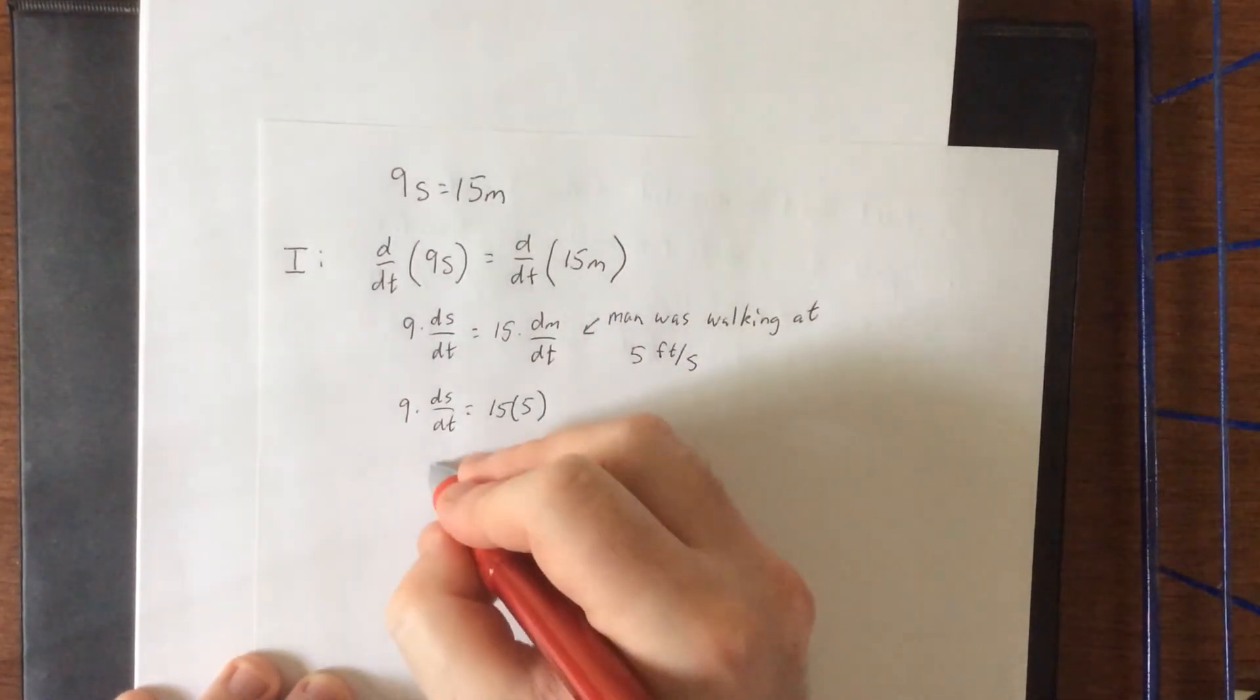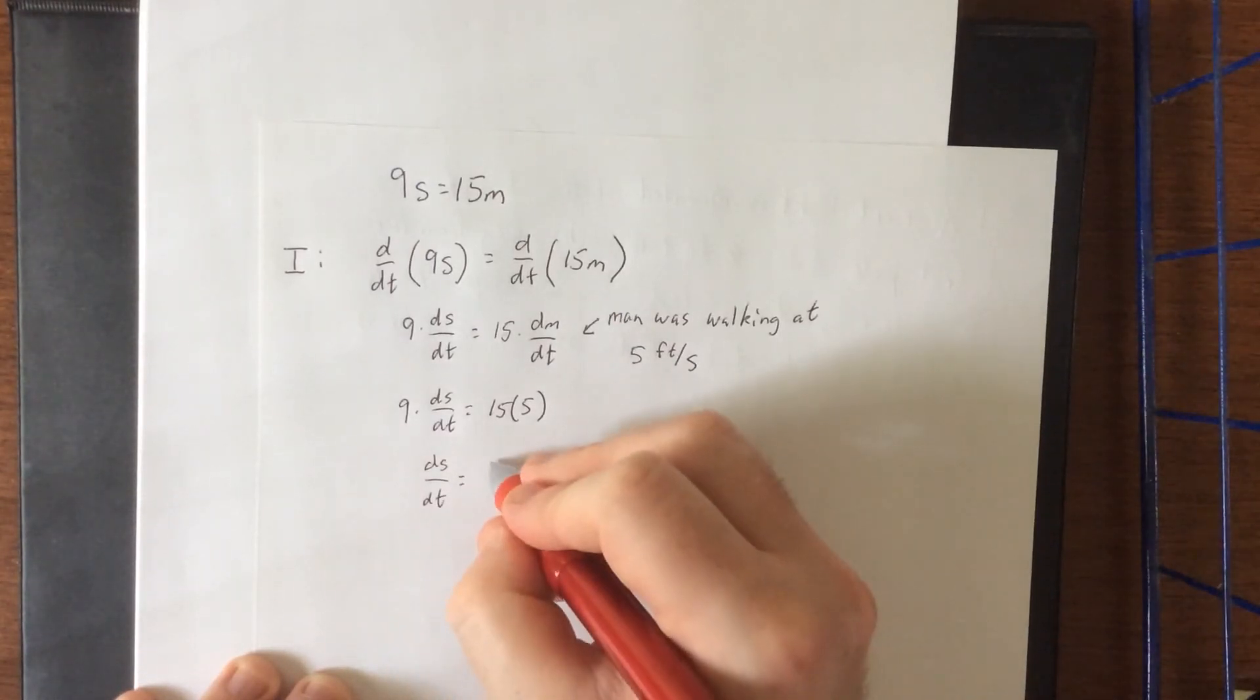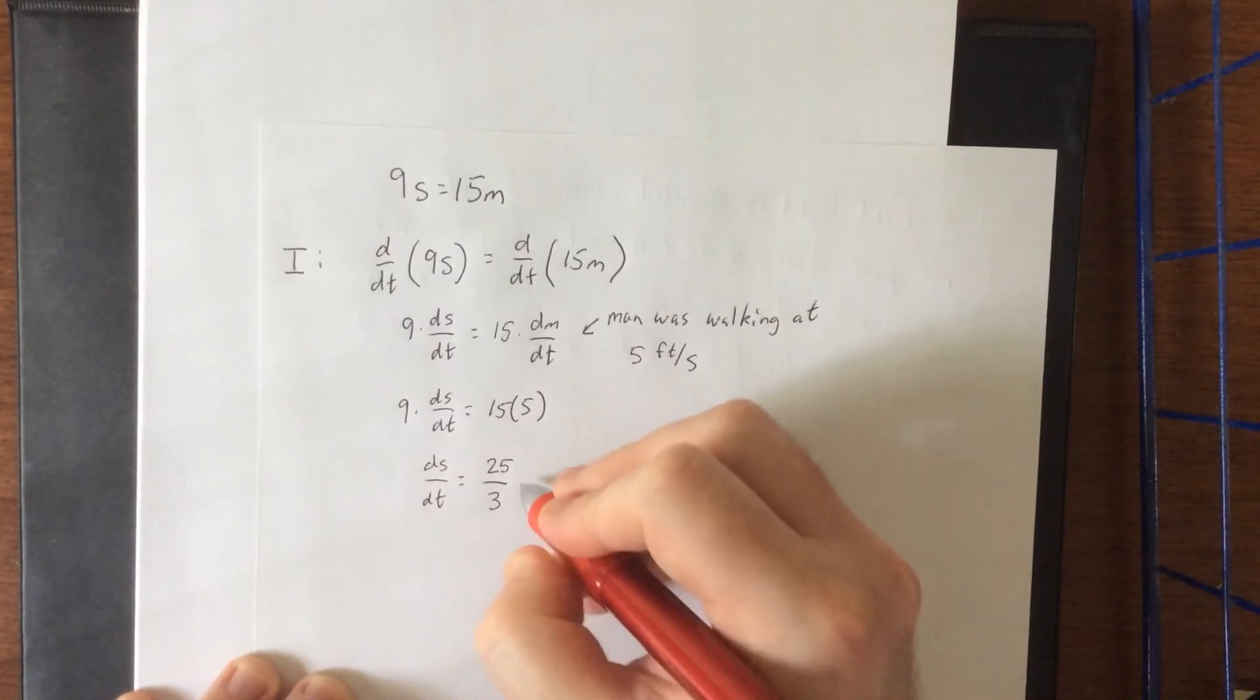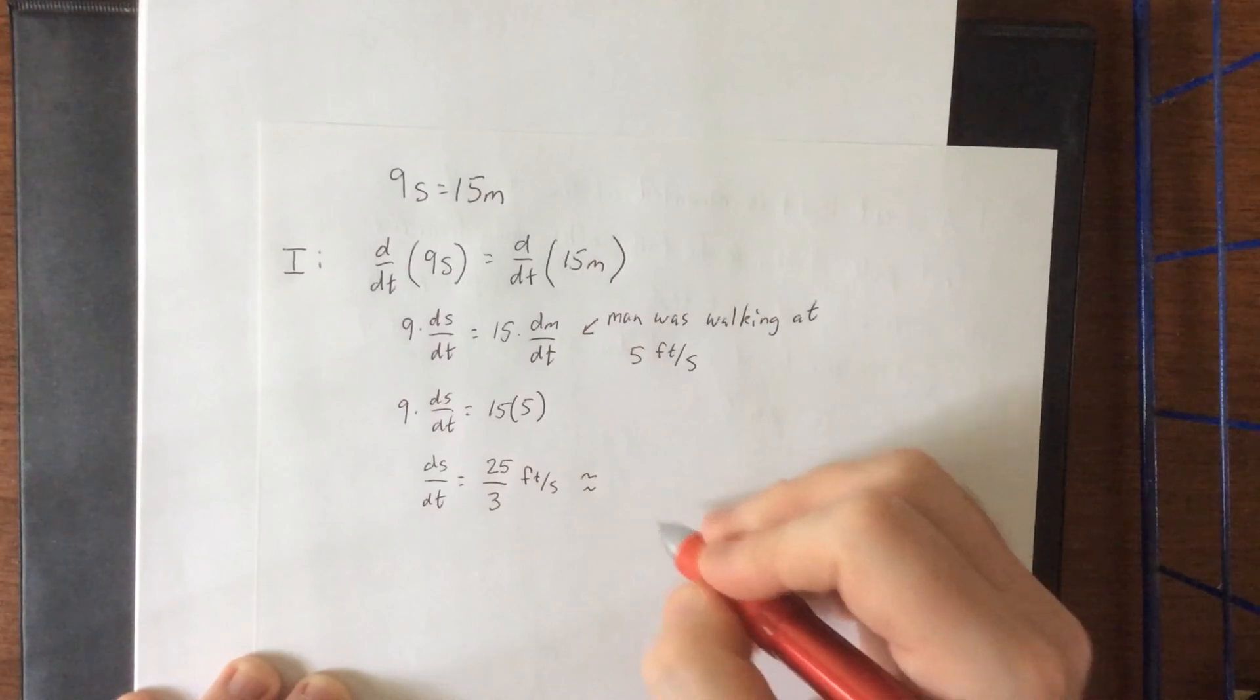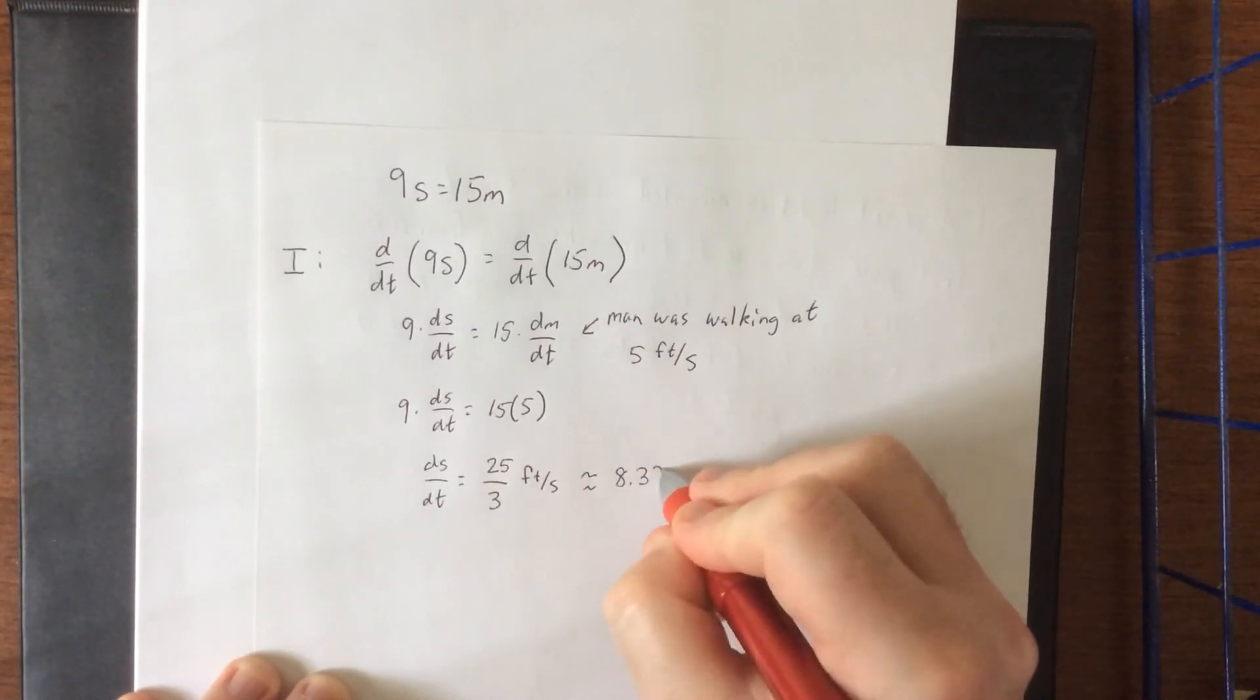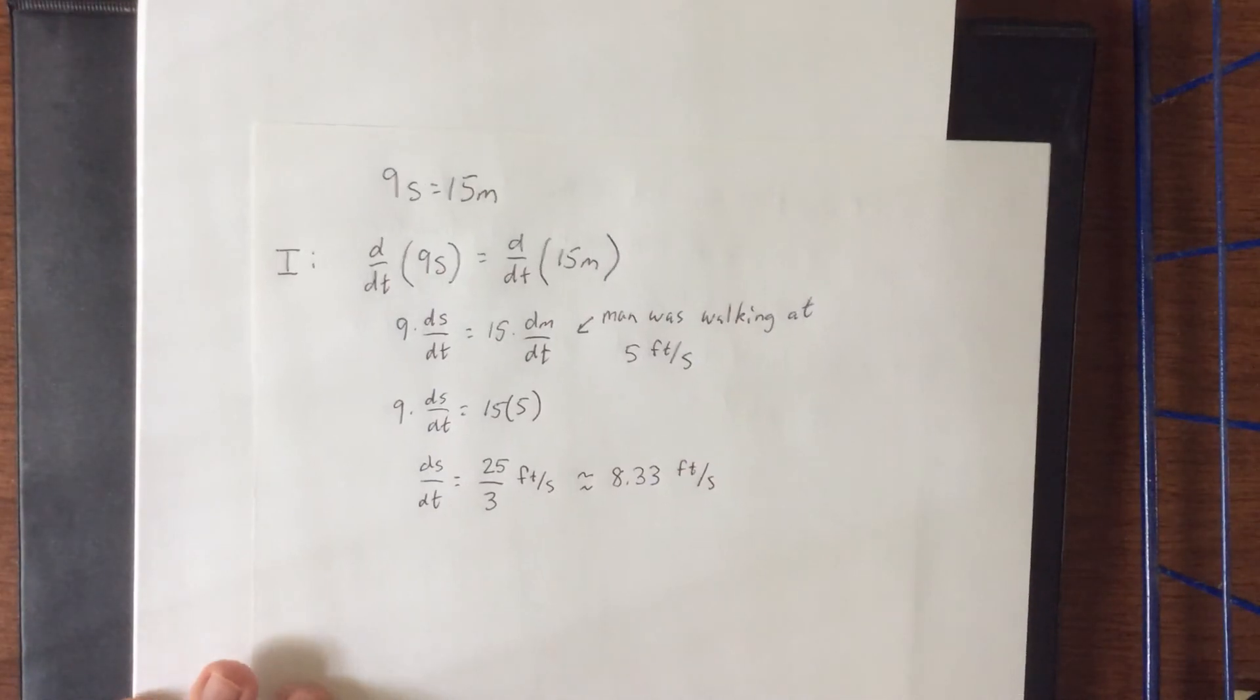Dividing both sides by 9, and then reducing the fraction as much as possible. This will be 75 divided by 9, which reduces to 25 over 3. And that will be feet per second. Or we could say that's approximately, if we wanted to round to the nearest second decimal place, about 8.33 feet per second.